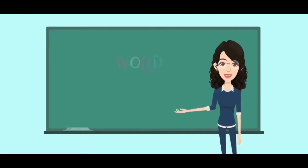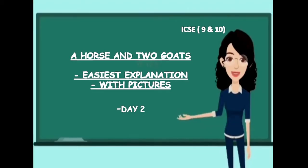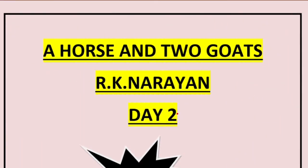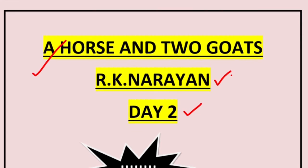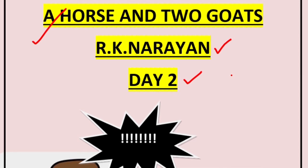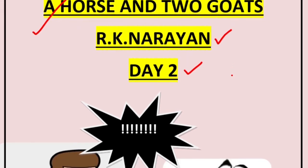Hello everybody, welcome to Word Shard. Today we will be doing the second part of the chapter 'A Horse and Two Goats', written by R.K. Narayan. In the last class we came to know that Muni was a very old, poor villager who did not get his drumstick curry and was very sad. He decided to take his goats to graze and sit there till evening, then come back for food.